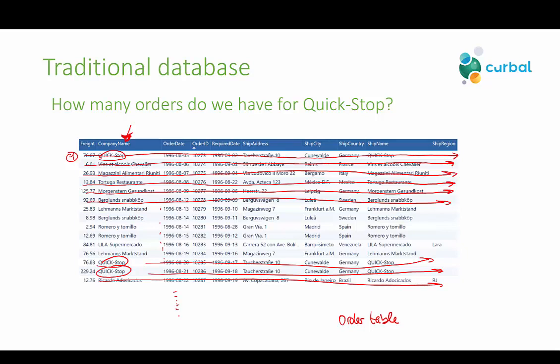So it will scan all rows and all columns — if you have 100 rows and 100 columns it will go through all of them. As you can see, for this small table this is absolutely no issue, but when you have bigger tables it becomes a problem. If you have a billion rows and 100 columns, it will have to go through all of them, which can be really, really big.